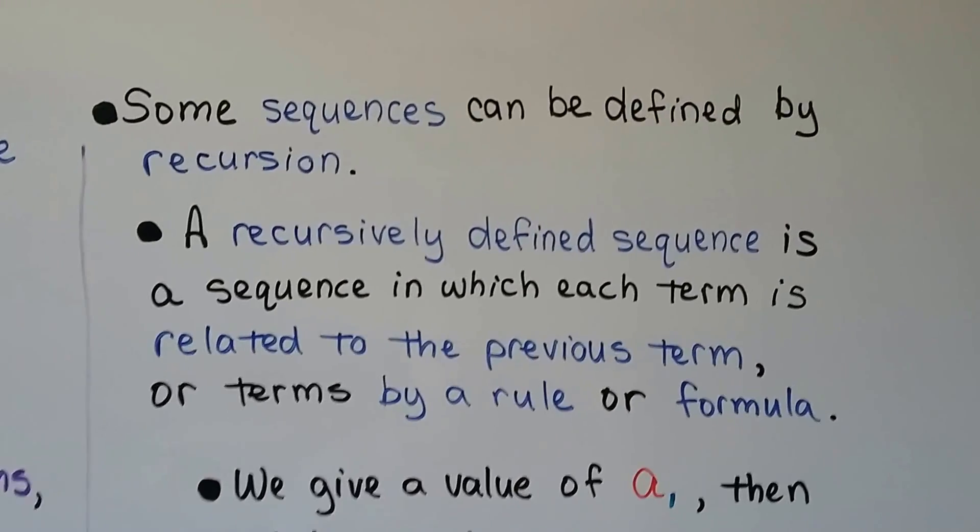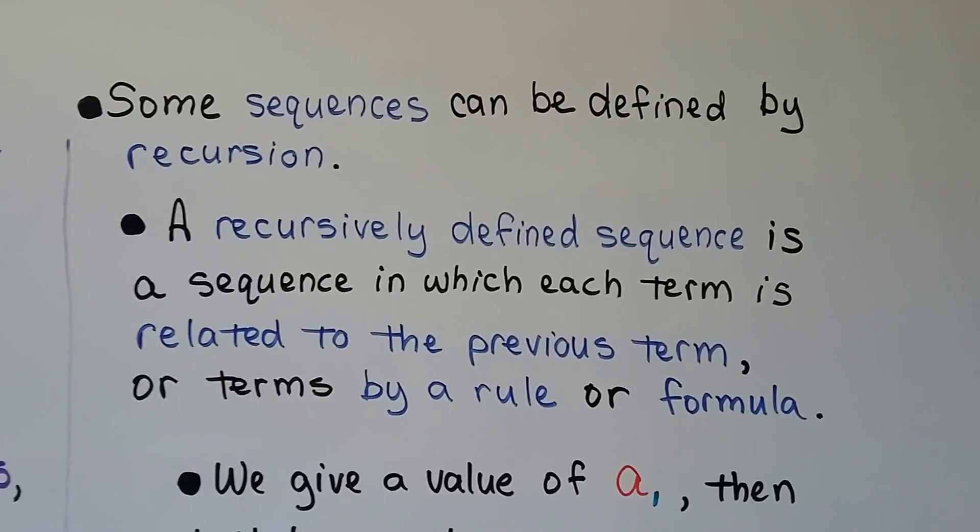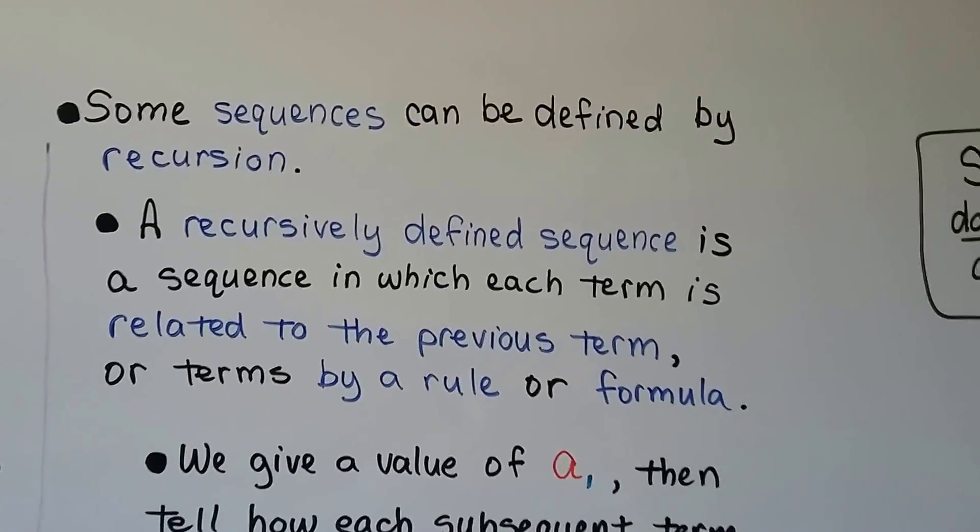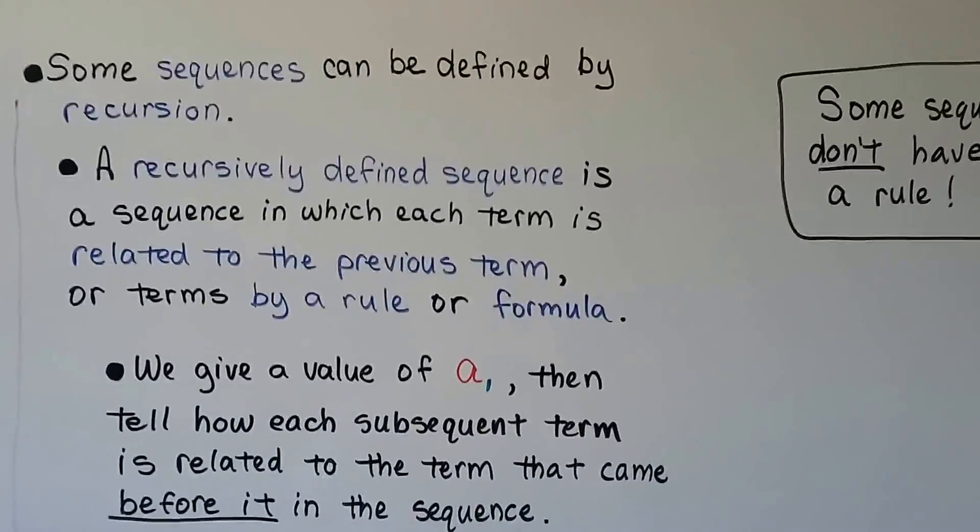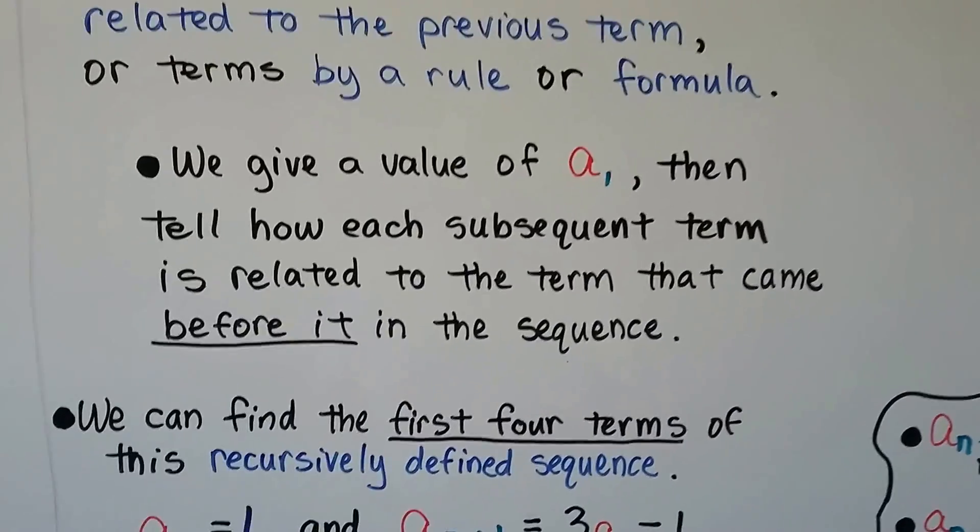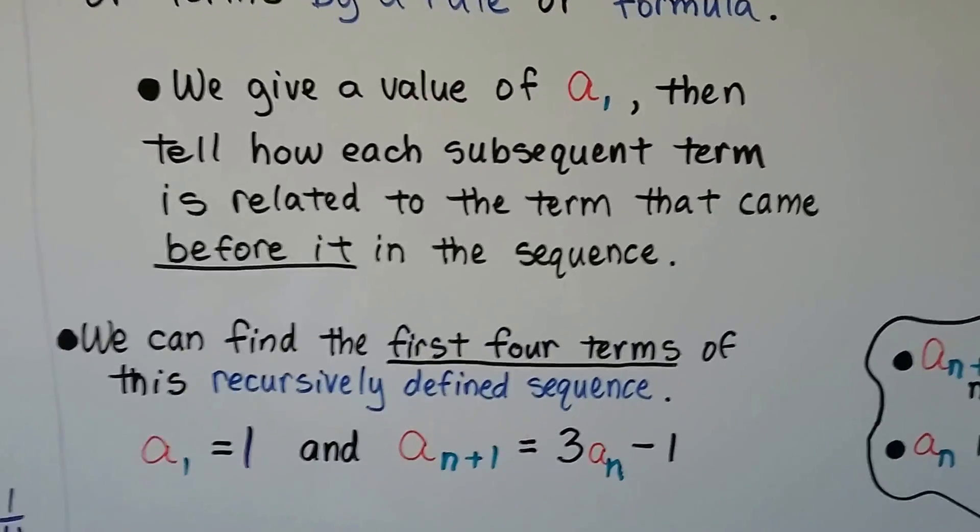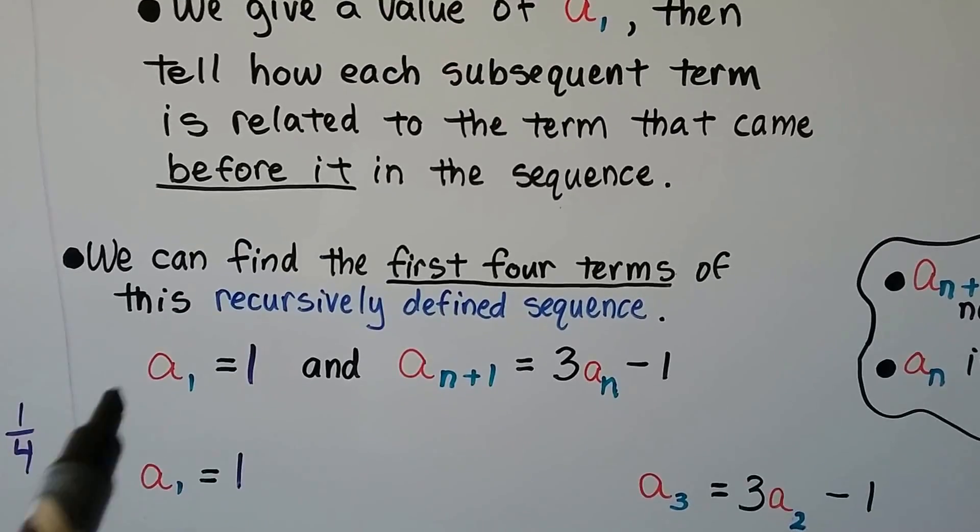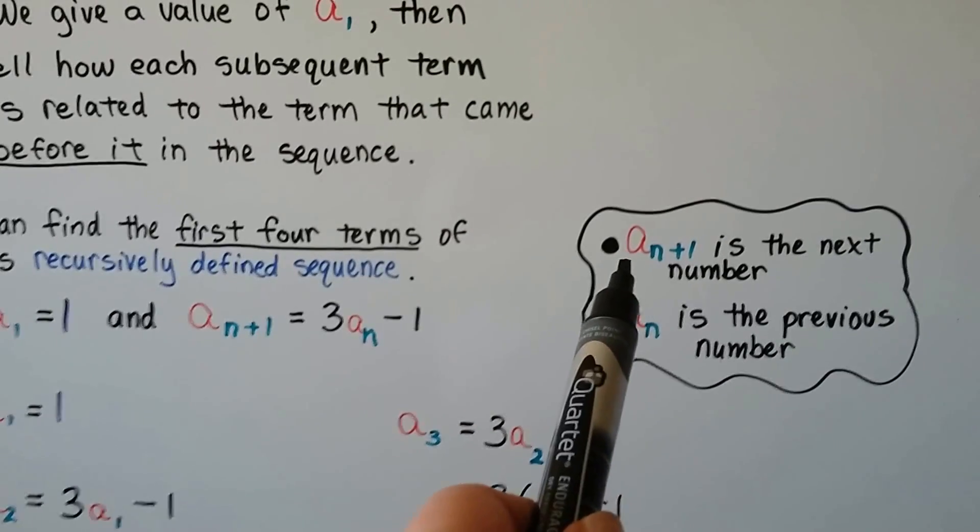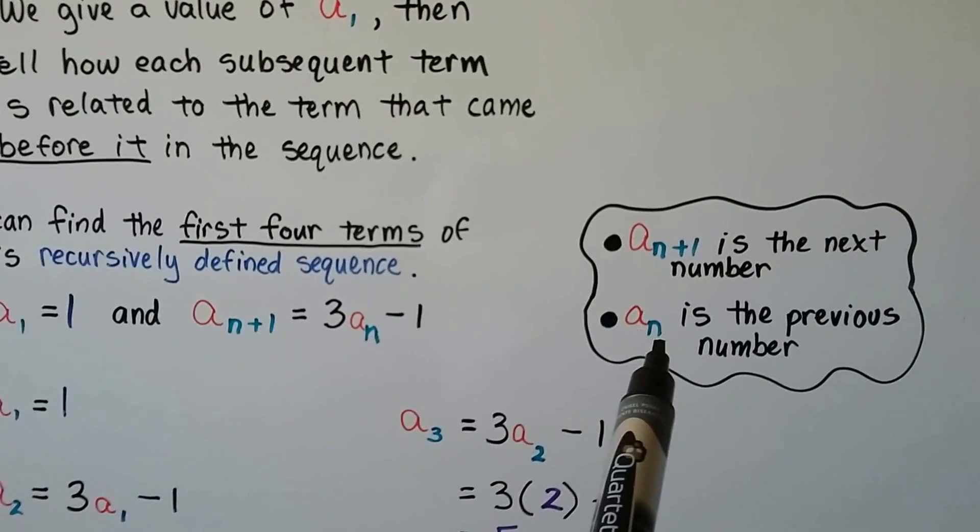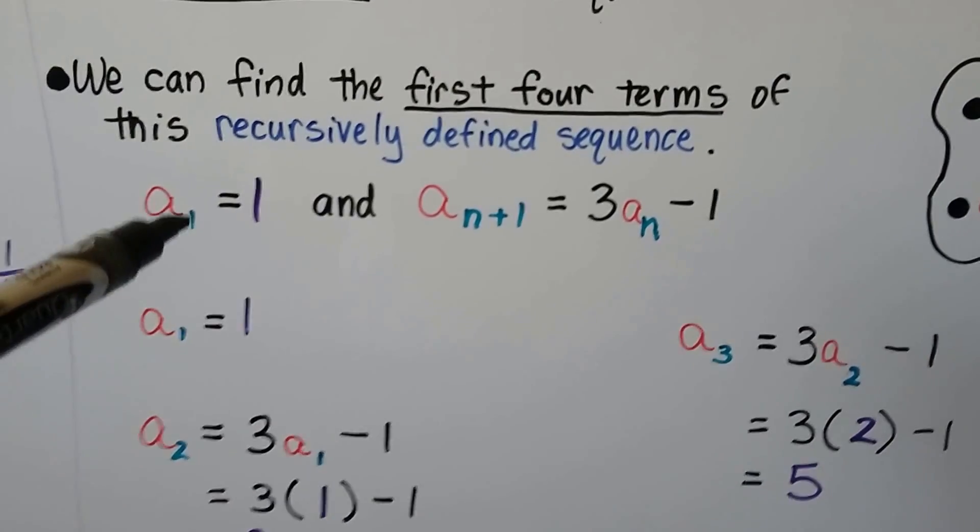Some sequences can be defined by recursion. A recursively defined sequence is a sequence in which each term is related to the previous term or terms by a rule or formula. Now, some sequences don't have a rule. That's why it says some sequences. We give a value of a sub 1, then tell how each subsequent term is related to the term that came before it in the sequence. And we can find the first four terms of this recursively defined sequence right here. But I want you to pay attention. This says n plus 1, and this is just n. So, the n plus 1 is the next number. The n is just the previous number.